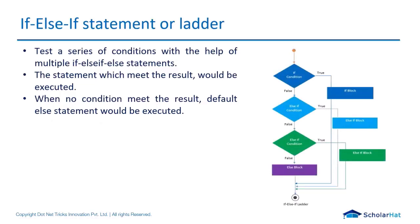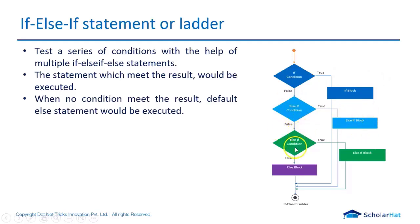This is how the flowchart works. The first condition in the if statement is checked. If true, that block executes. If not, the second else-if condition is checked. If true, that block executes. In consecutive sequence, whatever else-if statements are there, whichever is true, that respective block executes. If none of the if or else-if blocks execute, the default else block executes.